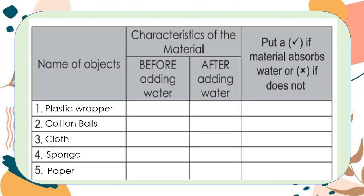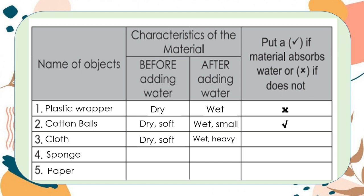Based on the activity, the characteristic of the plastic wrapper before adding to water is dry. After adding water, it becomes wet and it doesn't absorb water. For cotton balls, before adding water it is dry and soft. After adding water, it becomes wet and small — it absorbs water, so it's a check. For number three, cloth — it is dry and soft. After adding water, it becomes wet and heavy. That's why it absorbs water. It's a check.